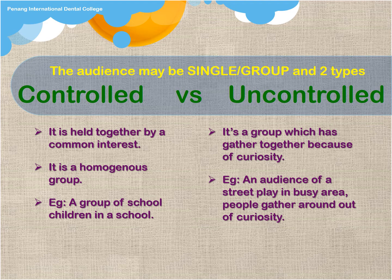The controlled type is held together by a common interest; it is a homogeneous group — for example, a group of school children or a group of students in a college. The uncontrolled group has gathered together because of curiosity — for example, an audience of a street play in a busy area. People gather out of curiosity and may not stay for the whole thing. With common interest they stay till the end; with curiosity they just move on.